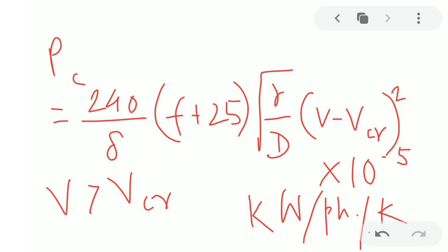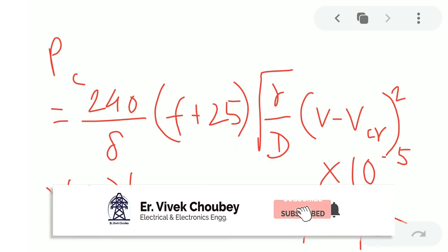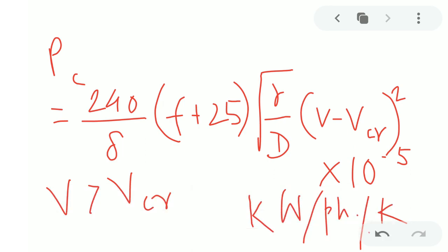The factors which cause V_cr to increase help mitigate corona loss. That covers corona discharge and corona loss, including critical disruptive voltage, dielectric strength, the derivation of key equations, and the various factors impacting corona. I hope this video was helpful. If you have any feedback, suggestions, or queries, put them in the comments below. Don't forget to subscribe and press the bell icon. This is Vivek Chauhan and I'll see you next time.